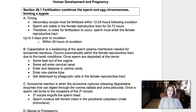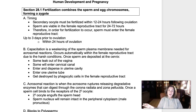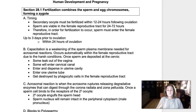In the last video, we talked about ovulation of the secondary oocyte, and we kind of left it out there in the fallopian tube. We left it hanging there and talked about other female structures and the menstrual cycle. So in this video, what I'd like to do is talk about the possibility of that secondary oocyte being fertilized and what's involved with that.